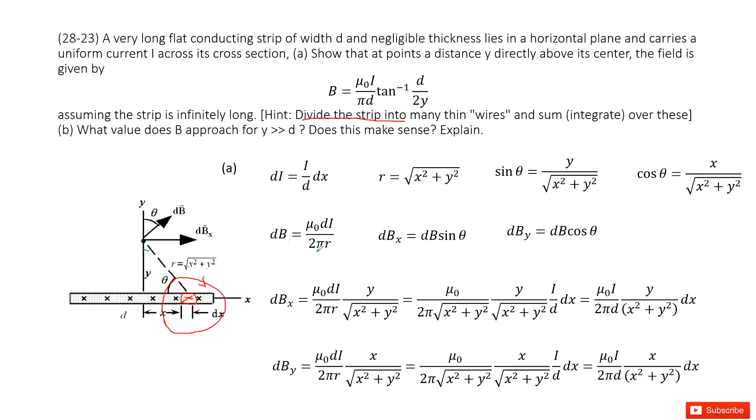And then in this equation we can consider for this small fraction, how can we describe its current di? You can see in this strip the total is i, but this i flows the distance d. For this small fraction the distance is dx. So we can get di equal to i divided by d times dx. Agree? Yes.